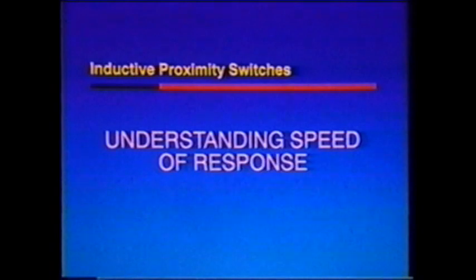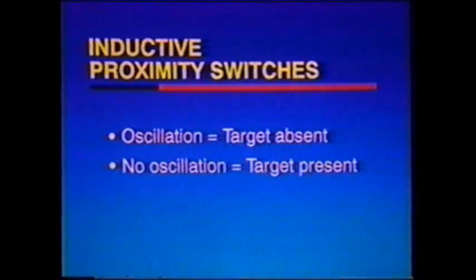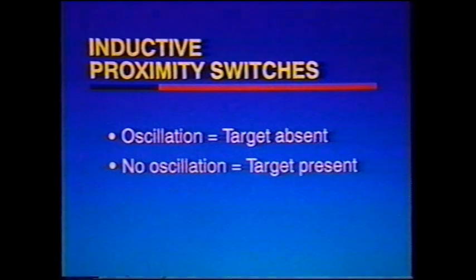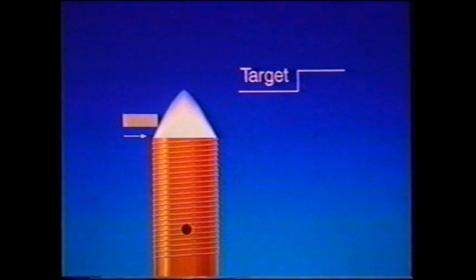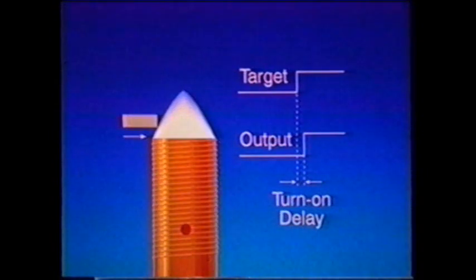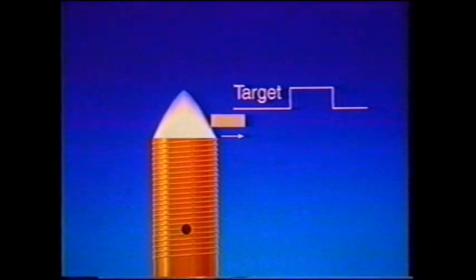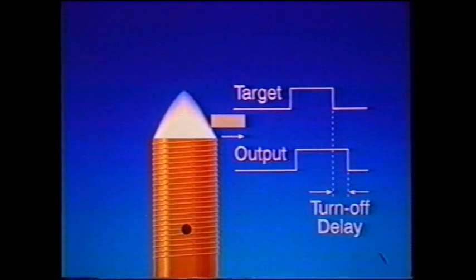Because they are solid state devices, proximity switches operate much faster than mechanical switches. To evaluate response time in a given application, remember that an inductive switch oscillates if the target is absent. When the target is present, oscillation stops. As a target enters the active zone, the output of the oscillator drops towards zero, and a short time later the output stage switches. The time between the target being detected and the change in output is the turn-on delay. As the target leaves the active zone, oscillation begins again, and when the oscillator reaches a predetermined level, the output switches again. This interval is the turn-off delay, and it can typically range from twice to ten times longer than the turn-on delay.